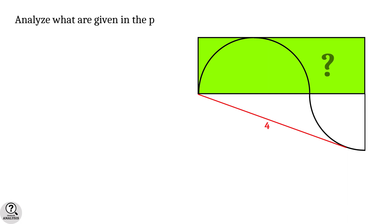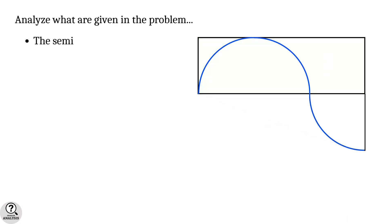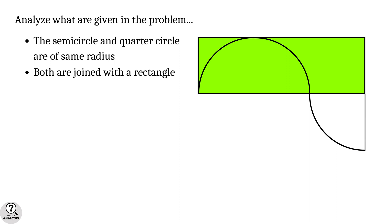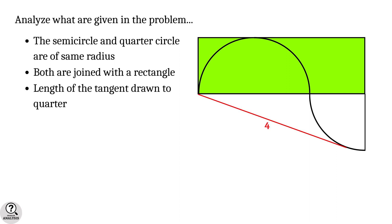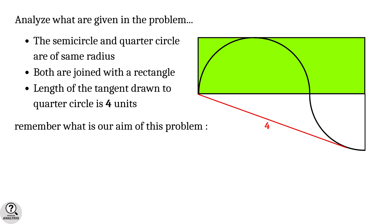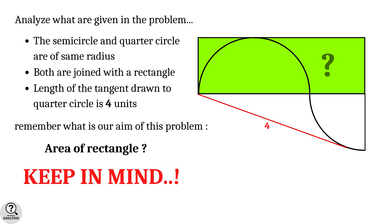First let's analyze what are given in the problem. First of all, the semicircle and the quarter circle are having the same radius. Secondly, both are joined with a rectangle. And finally, the length of the tangent drawn to the quarter circle is 4 units. Now remember our aim: it is to find the area of the rectangle. This is the structure of our problem, so always keep it in mind.